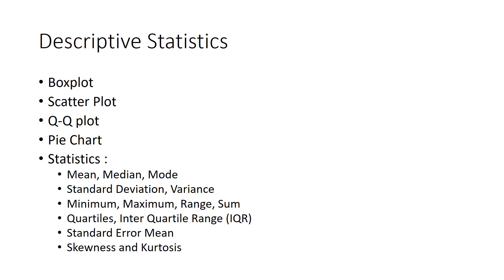We have the range, which is maximum minus minimum, and the sum — that is the total sum of all the data points. Then we have quartiles, and the interquartile range, denoted as IQR, which may be new to you. We also have standard error of mean, abbreviated as SE mean, and then skewness and kurtosis. Let me define these things for a quick recap so it is easier to use JASP later.